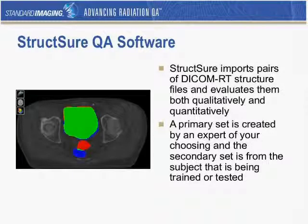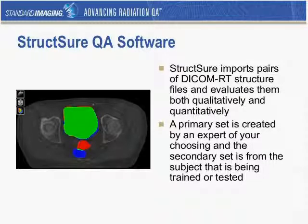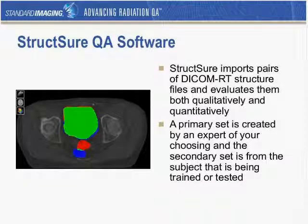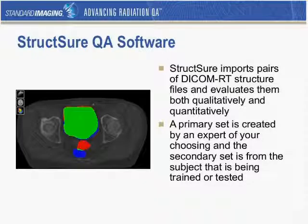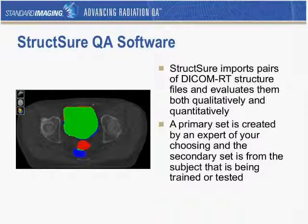This all kind of started with StructureQA software, which is a software that Standard Imaging developed. Basically the idea behind Structure is that it will take pairs of DICOM RT structure sets, import them, and then evaluate them both in a qualitative way and a quantitative way. The idea is that a primary set gets created by an expert of the user's choosing, and then a secondary set is going to come from either the subject — whether that's a person or an auto contouring tool — or whatever is being trained or tested.